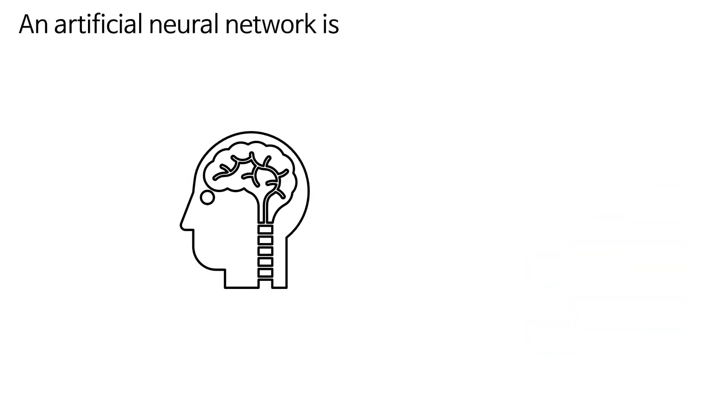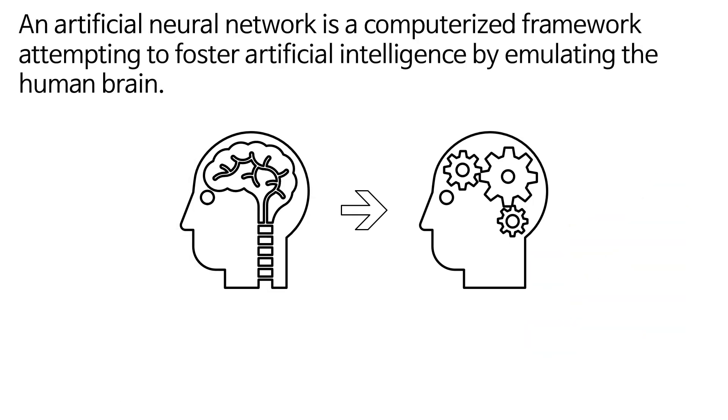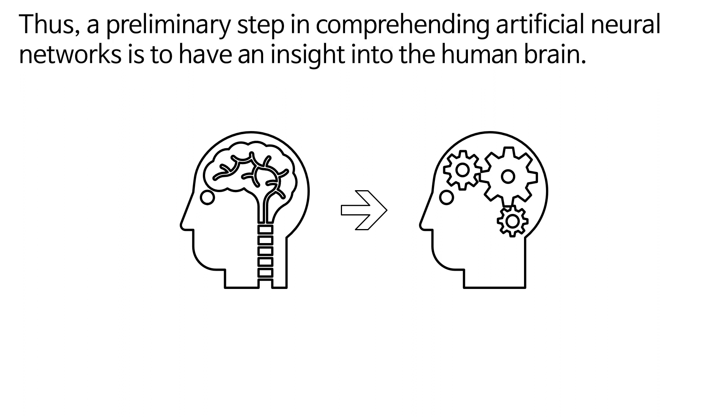An artificial neural network is a computerized framework attempting to foster artificial intelligence by emulating the human brain. Thus, a preliminary step in comprehending artificial neural networks is to have an insight into the human brain.